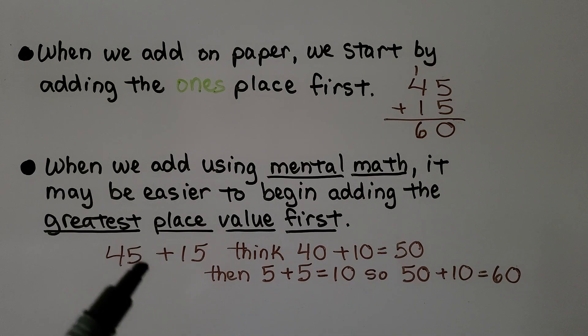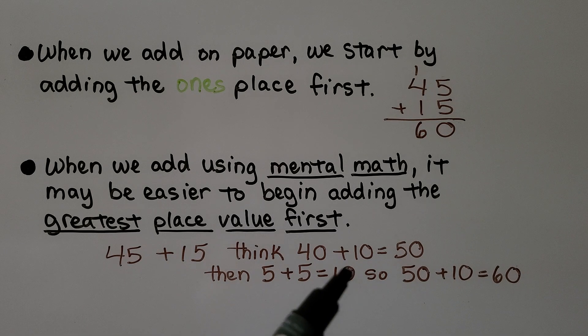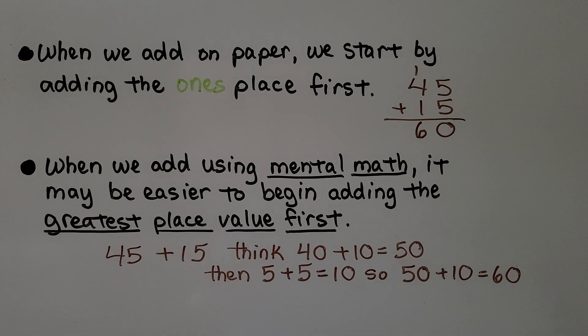Then we add the five plus five, which is 10, and do 50 plus 10 is equal to 60.